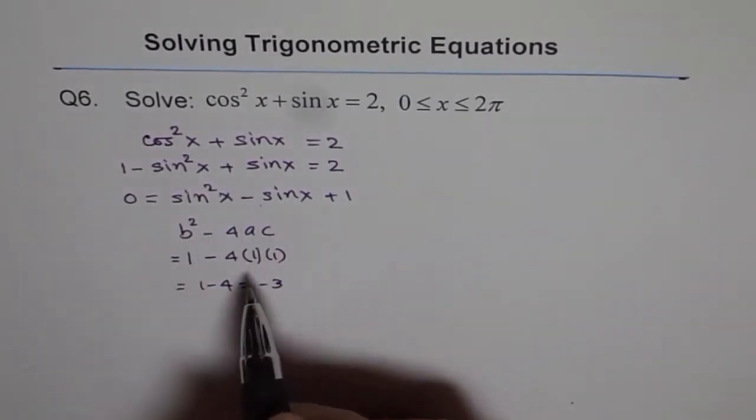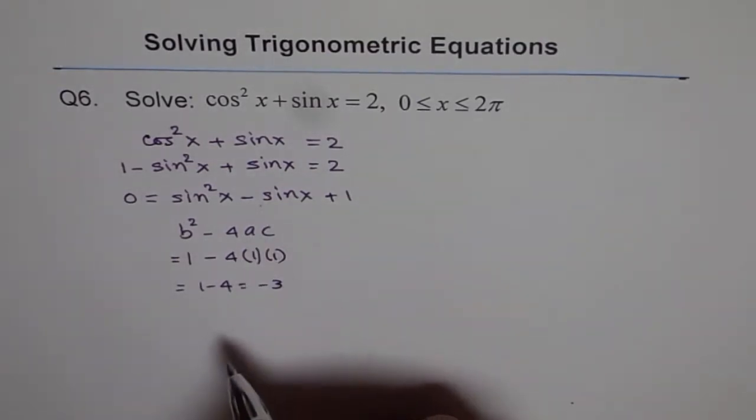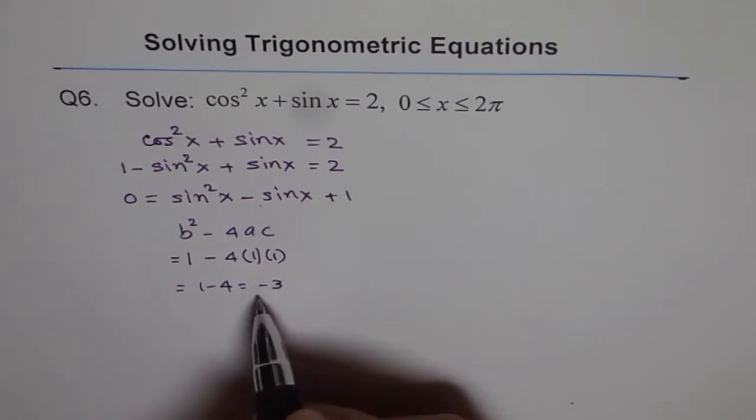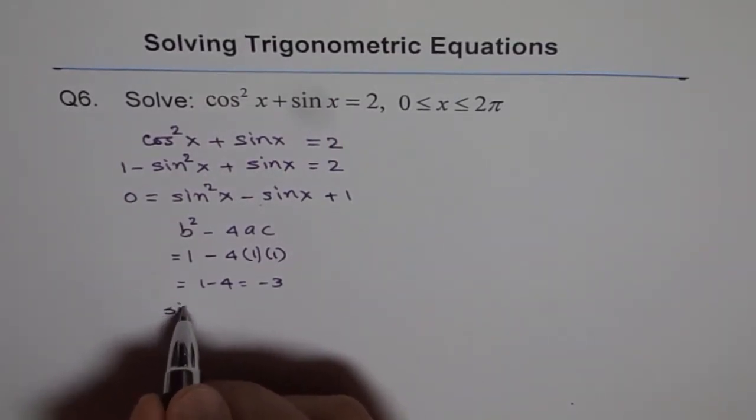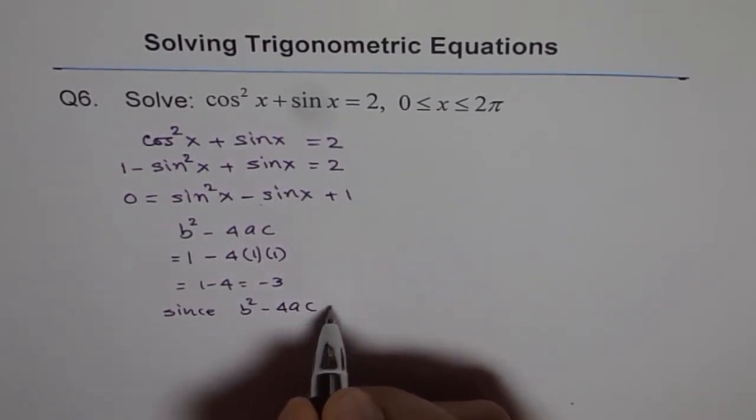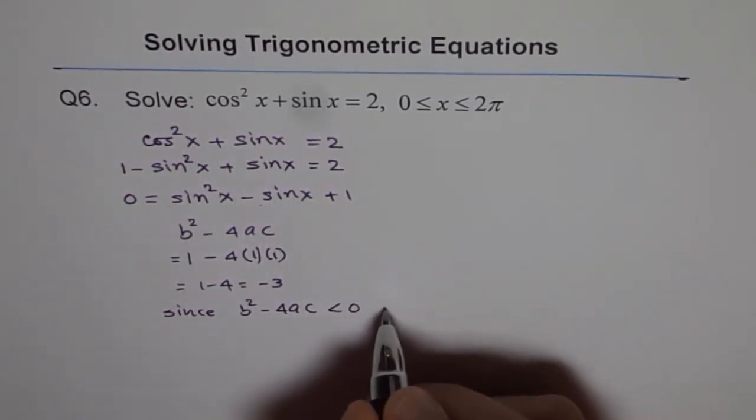Now since b squared minus 4ac is a negative number, there is no solution. For this particular equation, there is no solution. Since b squared minus 4ac is less than 0, no solution.